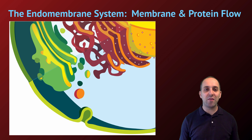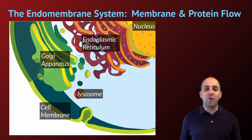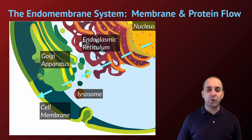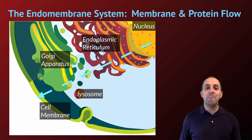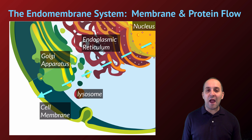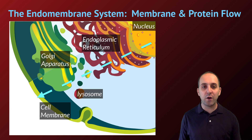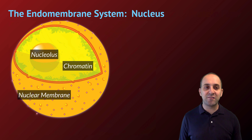Let's begin with the endomembrane system. The organelles we're going to focus on are shown here, and this is really the direction in which membrane and proteins flow inside of any eukaryotic cell. We'll go and talk about each one in turn, starting with the nucleus.